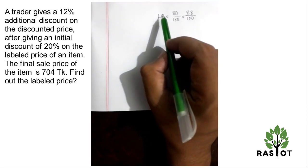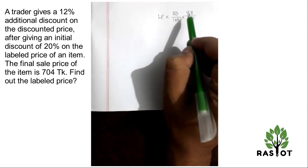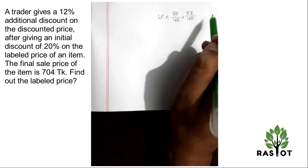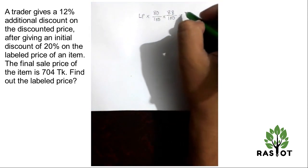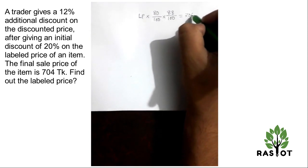So on the labeled price there's a 20% discount, and then a 12% discount on that discounted price. The final sale price is 704 Taka.